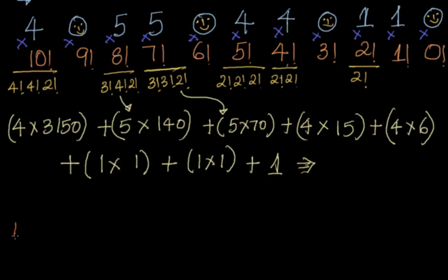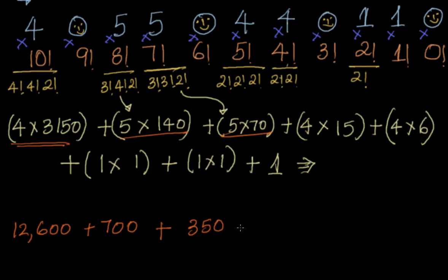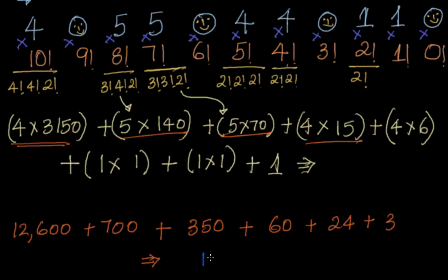Now let us simplify. 4 into 3150 is 12600. Plus 5 into 140 is 700. Plus 5 into 70 is 350. Plus 4 into 15 is 60. Plus 4 into 6 is 24. After that 1 plus 1 plus 1, which is 3. Adding all: 12600 plus 700 is 13300, plus 350 is 13650, plus 60 is 13710, plus 24 is 13734, plus 3 is 13737. This is the same answer we got using the general method.